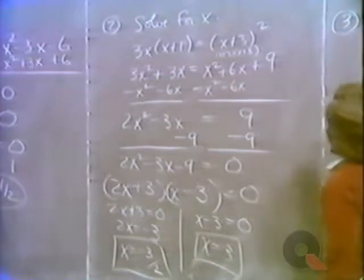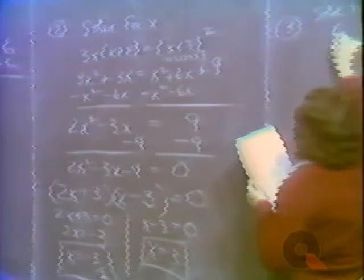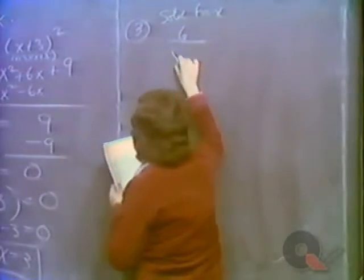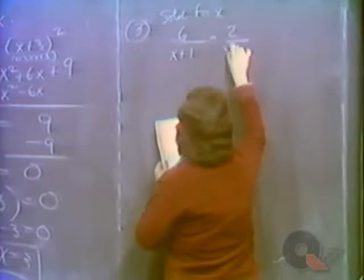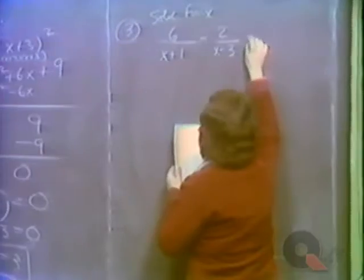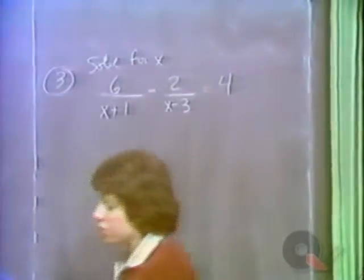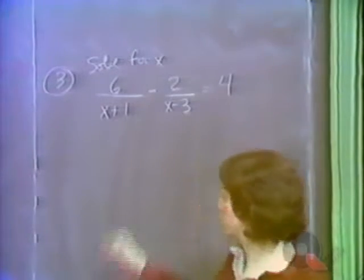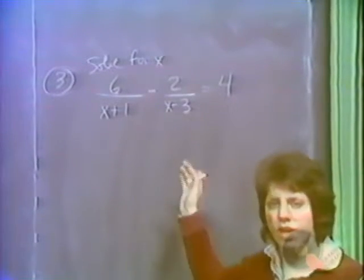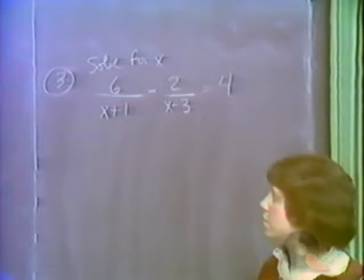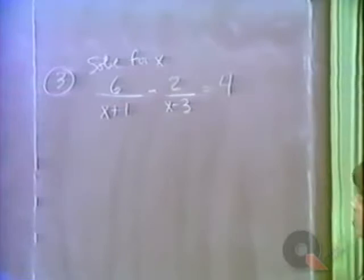Once again solve for x. This time we have a fractional equation: 6 over x plus 1, minus 2 over x minus 3, equals 4. The way we handle all fractional equations is to find the LCD — the lowest common denominator — and multiply both sides of the equation by the LCD to clear the fractions. We will then solve the resulting equation.